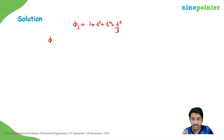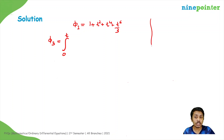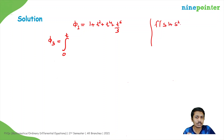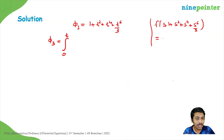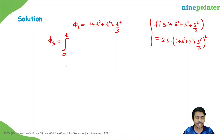Now we have to find the third Picard iterate, but not the complete iterate — we only need the coefficient of x raised to 10. The expression is the integral from 0 to t of f(s, φ₂(s)) ds plus 1, where φ₂(s) = 1 + s² + s⁴ + s⁶/3. We will not evaluate the complete integral; we just need the coefficient of x raised to 10.